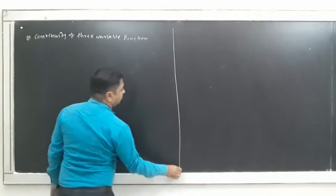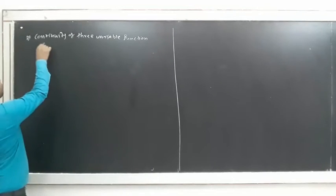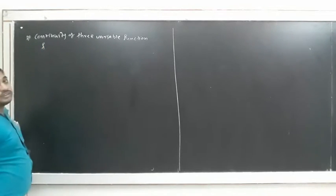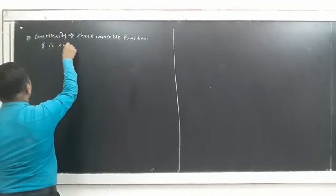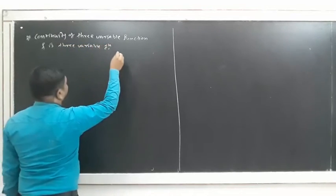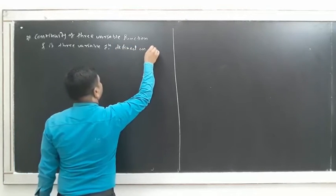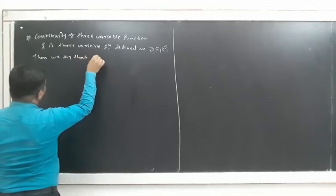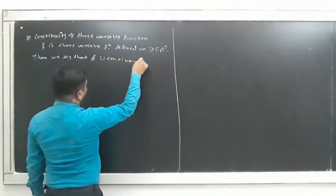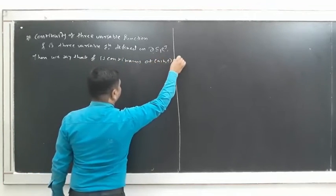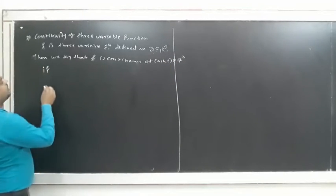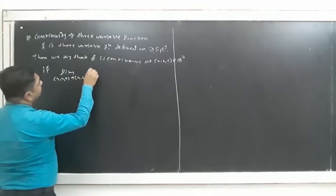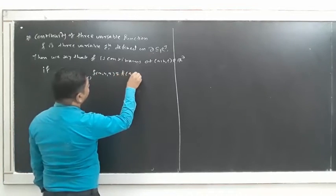Suppose f is a three-variable function defined on the domain D, a subset of ℝ³. Then we say that f is continuous at (a, b, c) in ℝ³ if the limit as (x, y, z) tends to (a, b, c) of f(x, y, z) is equal to f(a, b, c). Same definition as before.